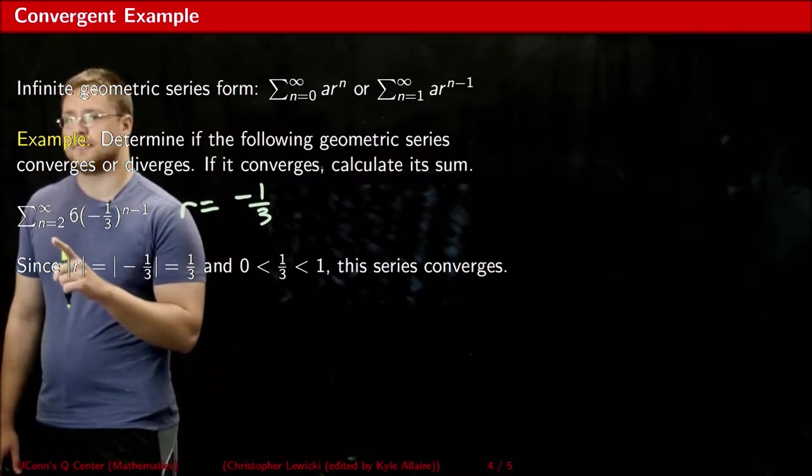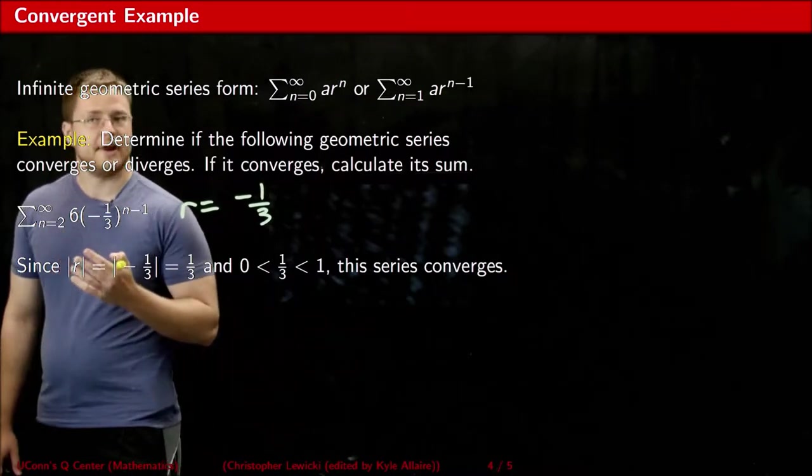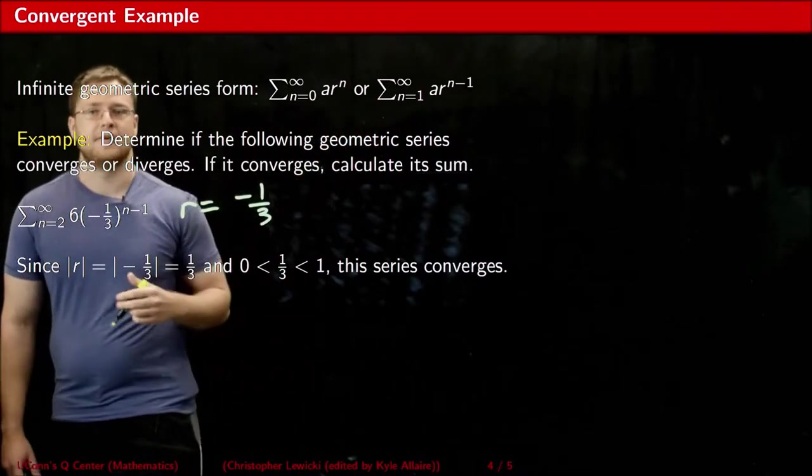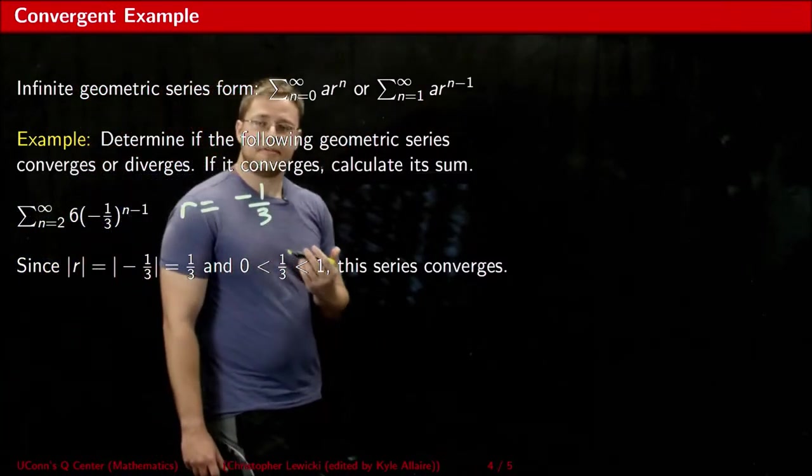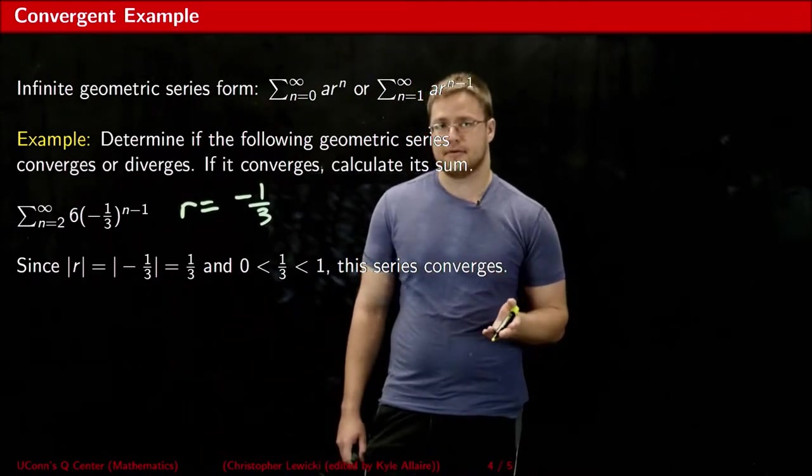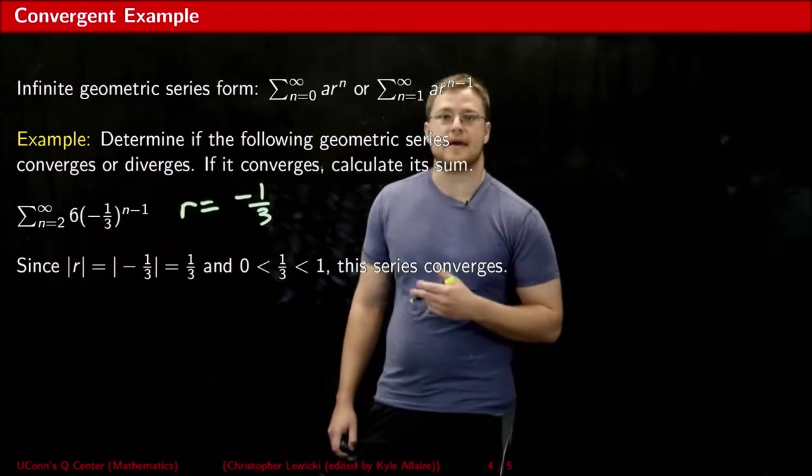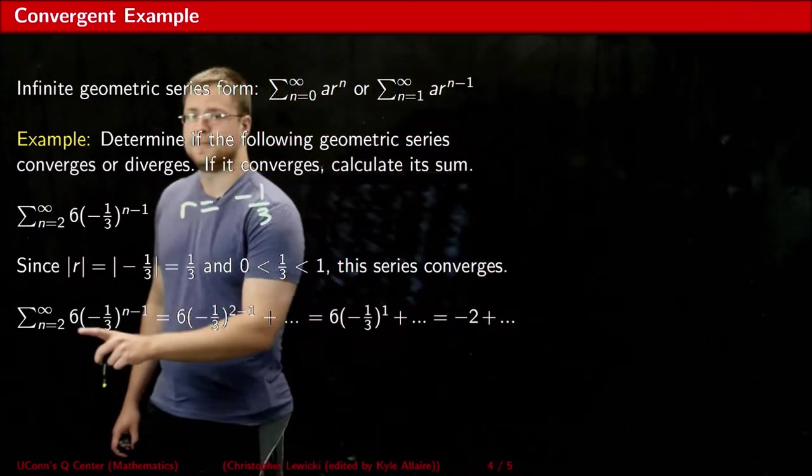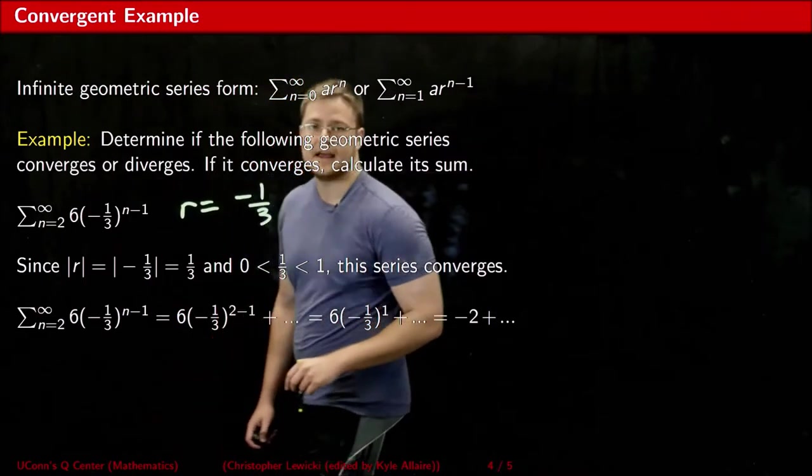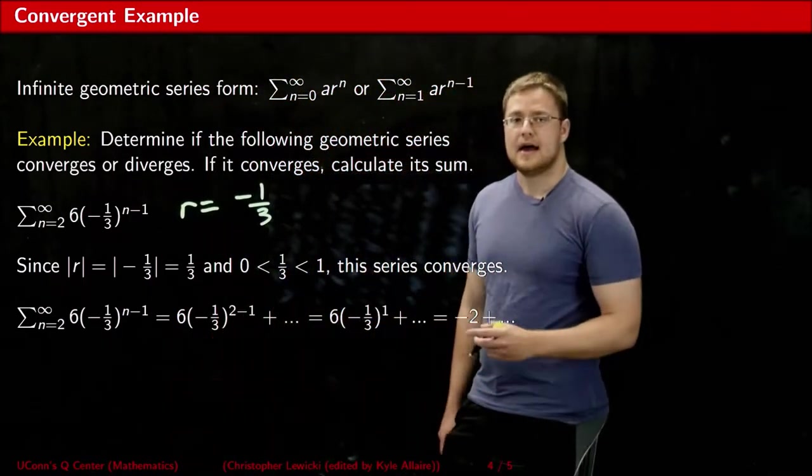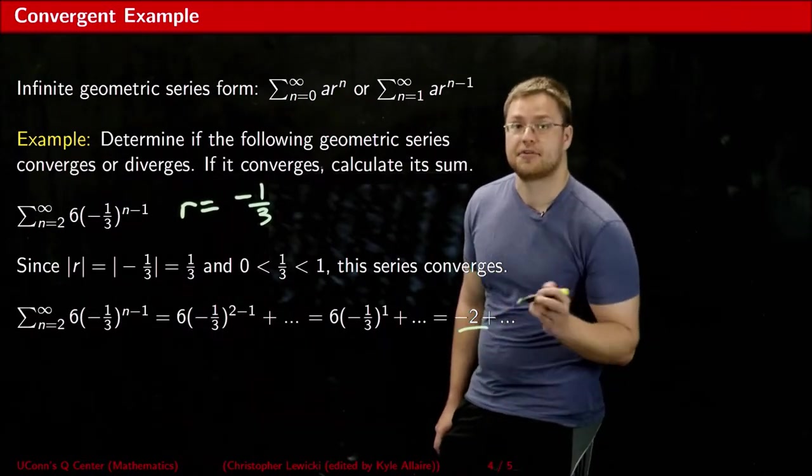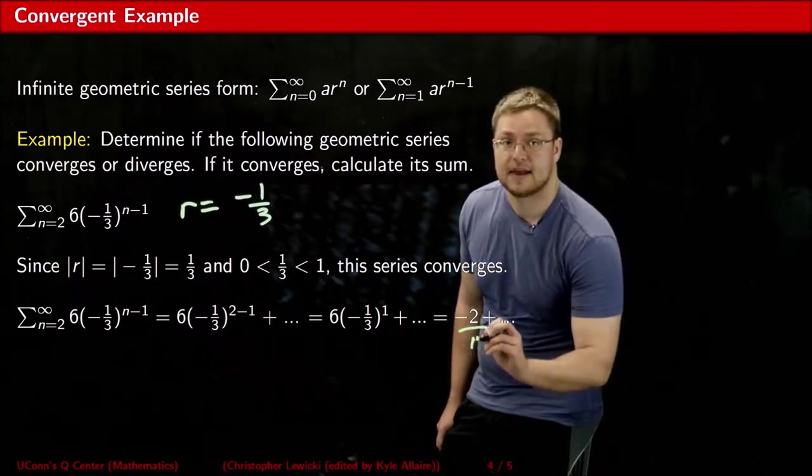We're not used to that because we're used to seeing geometric series written out one of these two ways. This means that our a value is going to be something different from what we expect it to be. To solve for it, all we need to do is substitute in the lower bound of our series into the expression and see what we get. As you can see, our true a value, in other words, our true first term of the series, is negative 2.